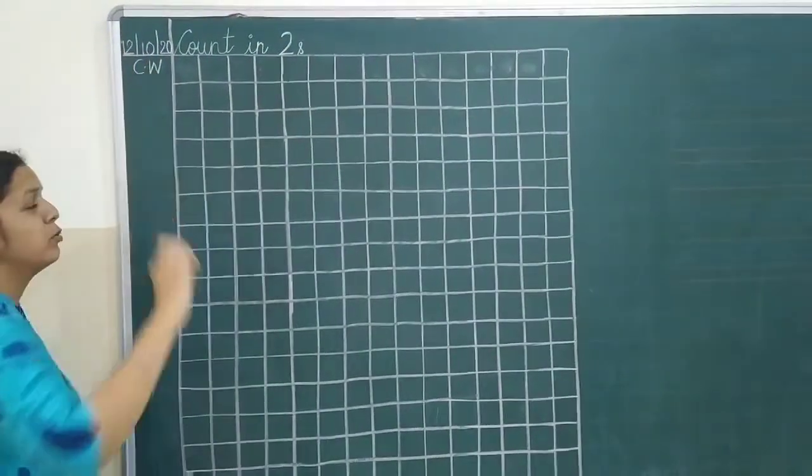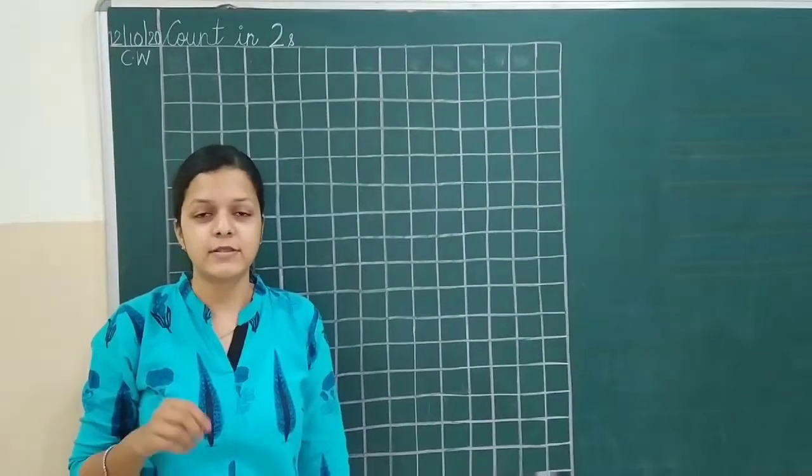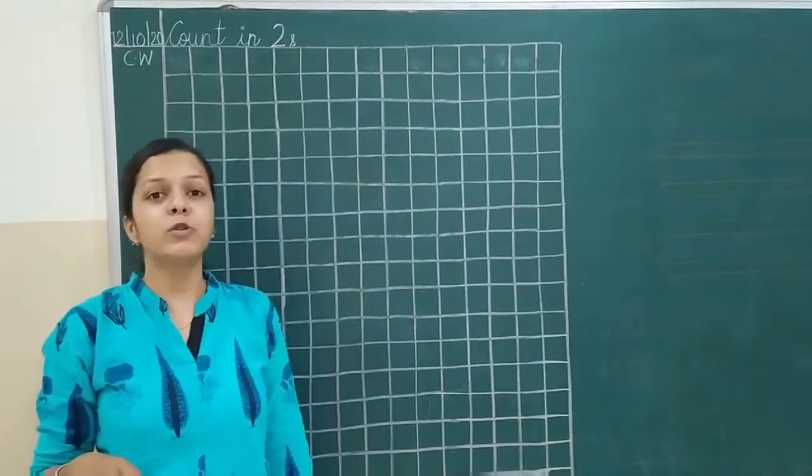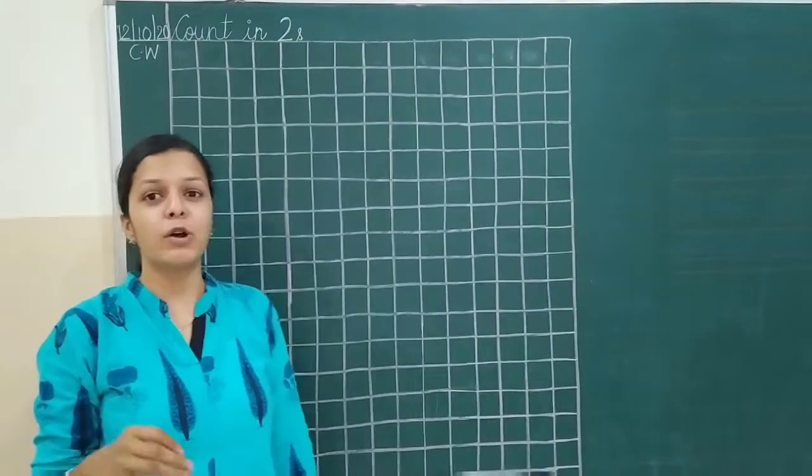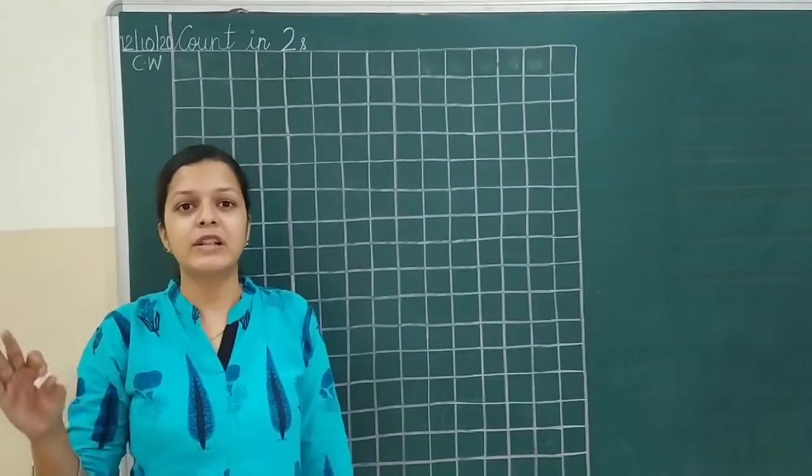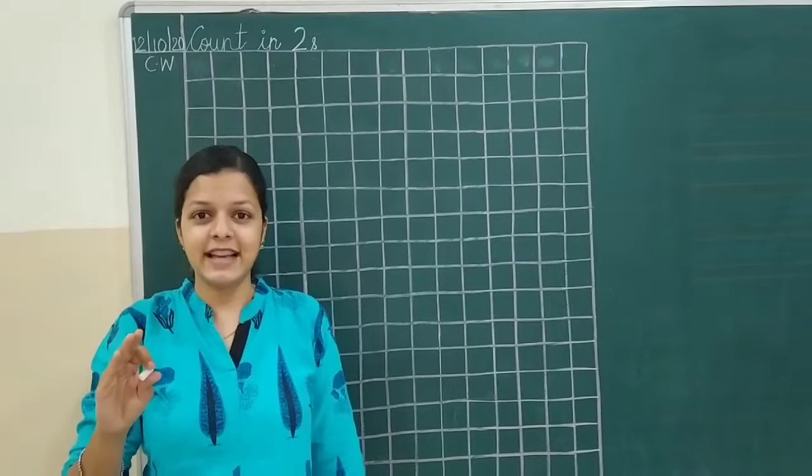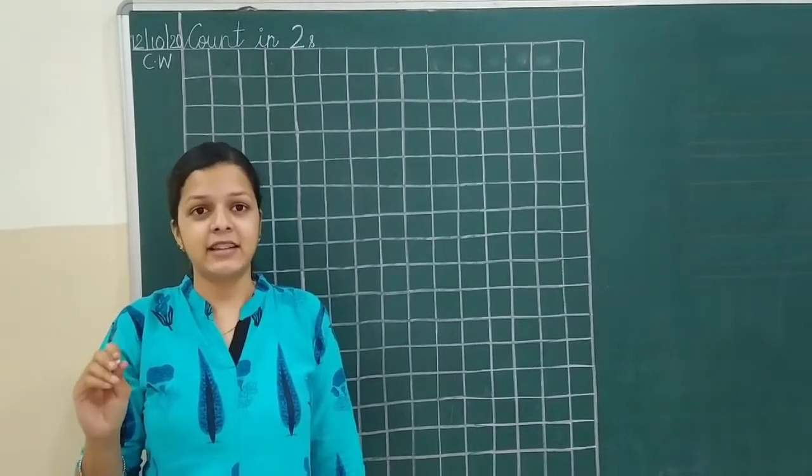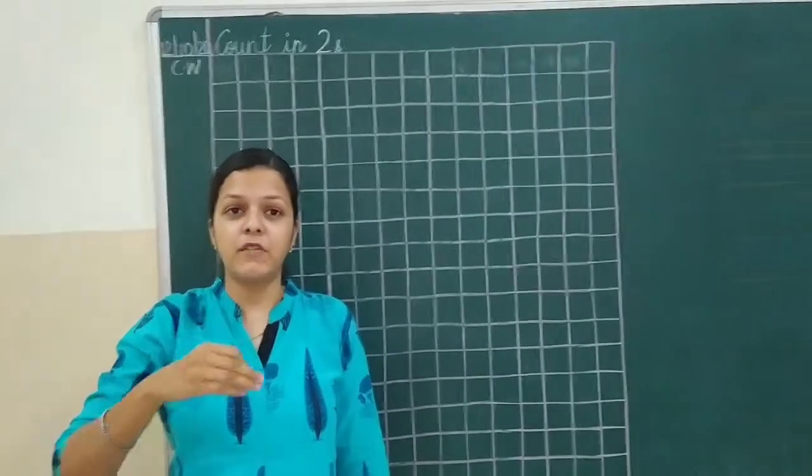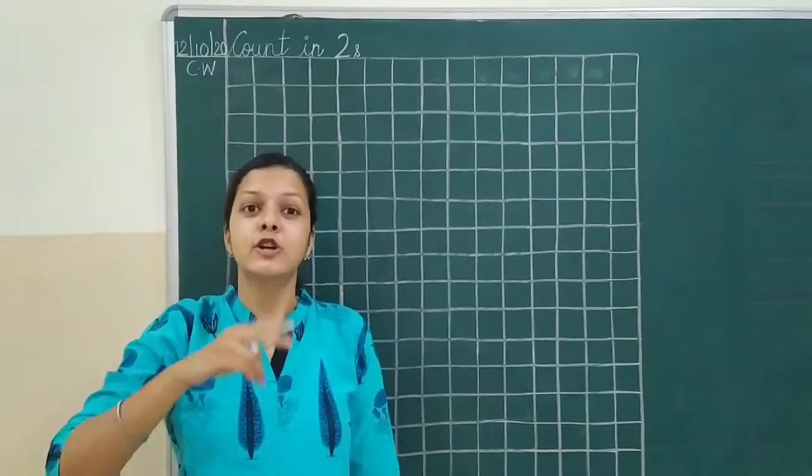Write the title count in two. Today's limit is CW. So, what does this count in two means? Count in two means, for example, we are going to write even numbers. Now, we will start with 2, 4, 6, 8 like this. In every number, we will leave 2, yes, 2 space.